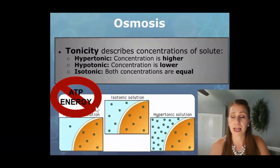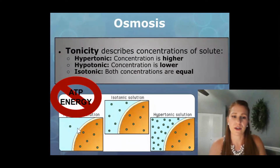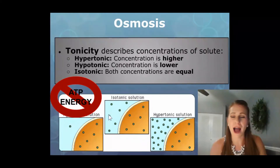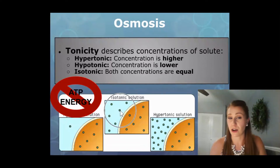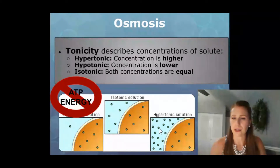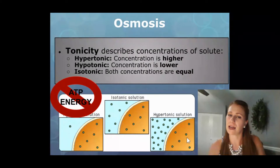So we have three different types here. This is our hypotonic solution. We have an isotonic solution where molecules are equally spread on both sides — there is no higher or lower concentration. And in the hypertonic solution, we have a much higher concentration of these bluish-green dots on the outside of the cell compared to the inside, where it's a much lower concentration.